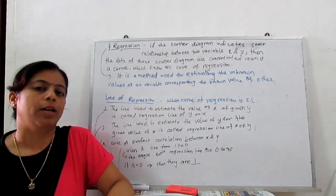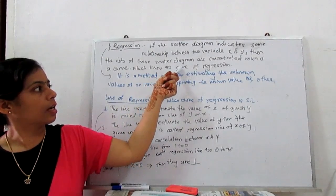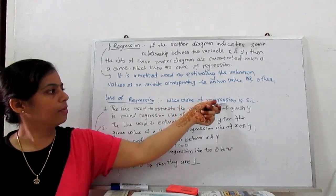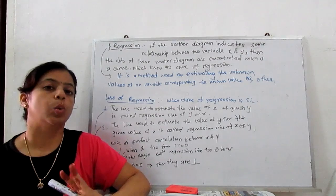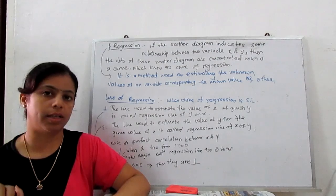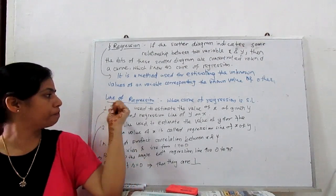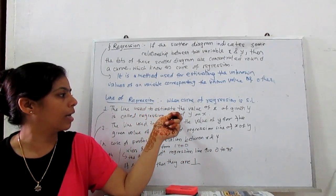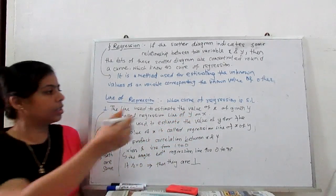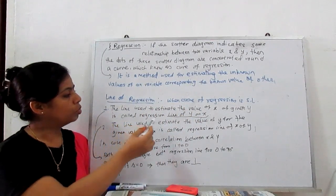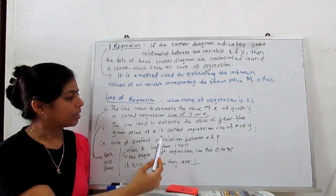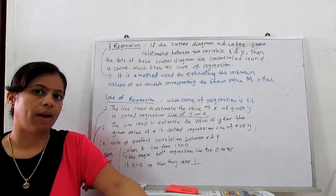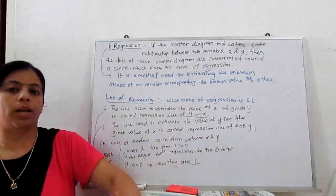The line of regression is when the curve of regression is a straight line. There are two types: the line of regression y on x, and the line of regression x on y. The line used to estimate the value of y for a given value of x is called the regression line of x on y, and similarly the line used to estimate x given y is the regression line of y on x.